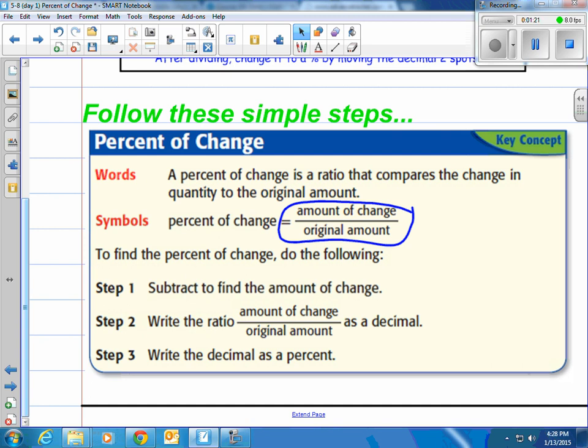Subtract to find the amount of change, which is subtract the two values that you're given. Then write the ratio with the amount of change on top and the original amount on bottom as a decimal, which means you have to divide those two. And then write the decimal as a percent, moving the decimal over two spots.